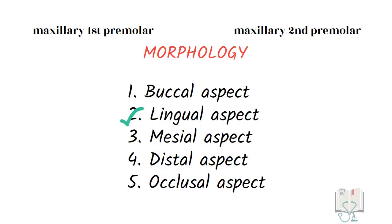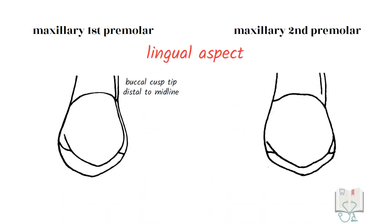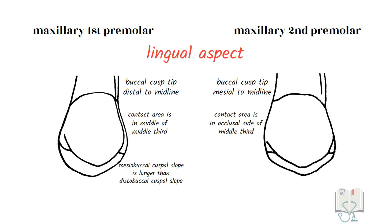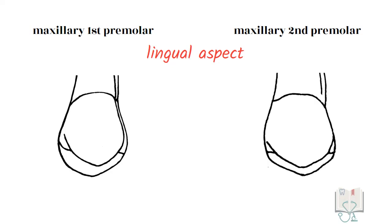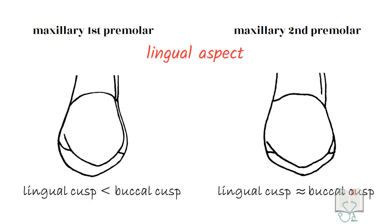Coming to the lingual aspect, the differences in the outline form seen from the buccal aspect are the same in the lingual aspect as well. Moreover, in the first premolar the lingual cusp is smaller than the buccal cusp, whereas in the second premolar both cusps are almost of equal height.